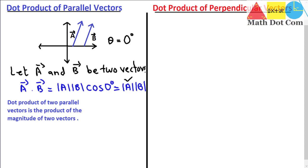The magnitude of vector a and the magnitude of vector b are found using the formula: magnitude equals the square root of the x-component squared plus the y-component squared. Using this formula, you can easily find the dot product of parallel vectors — you just need the components of the two vectors.